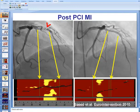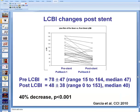Another potential complication of coronary intervention is no-reflow and post-procedural myocardial infarction. This is an example of a mid-LAD lesion with a large lipid core plaque, which was stented, resulting in no-reflow and a reduction in the amount of lipid core plaque, suggesting that possibly distal embolization from the area of lipid may have contributed. The exact mechanism remains unknown — whether it is due to distal embolization or displacement of the lipid deeper into the coronary artery wall.